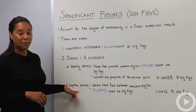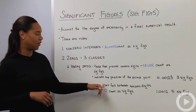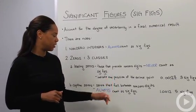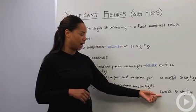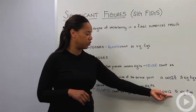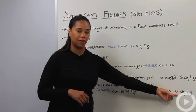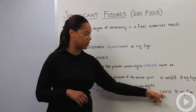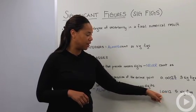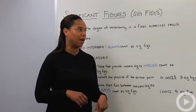The second are captive zeros. Those are the zeros that fall in between non-zero digits, and those guys always count as sig figs. For instance, if you had the number 1.0012, you're going to have five significant figures. All of these numbers are significant because these zeros are captivated basically by the non-zero integers on either end.